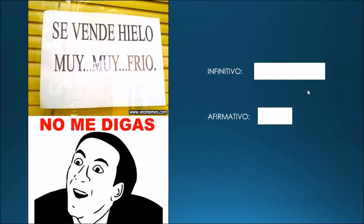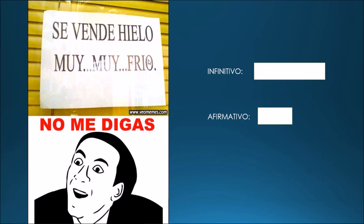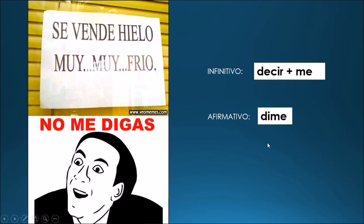Otro ejemplo con no me digas: se vende hielo muy, muy frío — ice for sale, very, very cold. No me digas — you don't say! Here it's kind of sarcastic, because obviously ice is very, very cold. So it's a sarcastic response. El infinitivo de no me digas: decir, y me. Y el afirmativo: dime. Di is irregular.